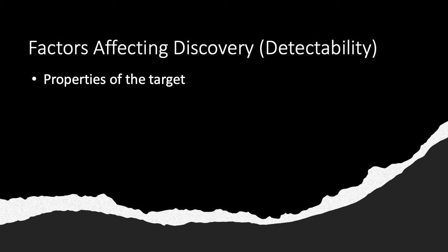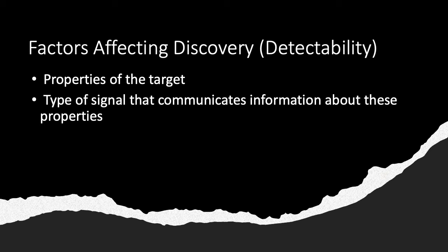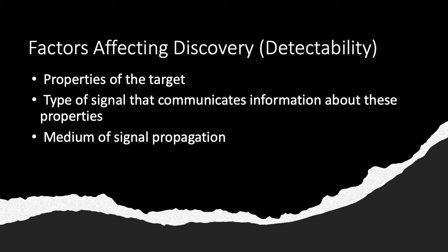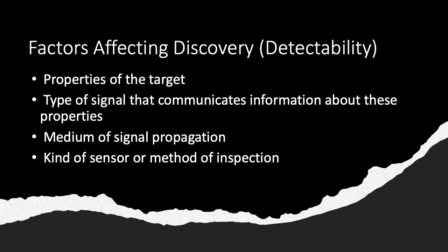All of these methods are vulnerable to an array of factors that affect their success at detecting things. One such factor is the properties of the target and whether those properties contrast with their environment. Another is the type of signal that communicates information about that target to some kind of detector, which could be human eyes. Another is the medium of signal propagation, whether through soil or through the air. And one that's under our own control is the type of sensor or method of inspection we use, as well as our ability to recognize the signal and correctly identify it.